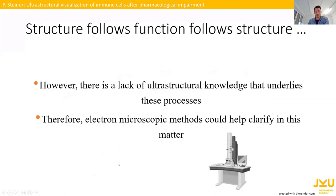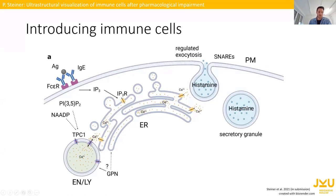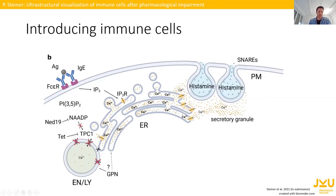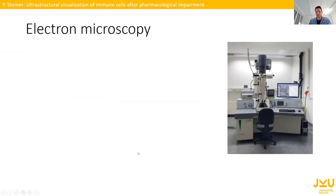If this cascade is triggered by an allergy, there is a higher release of calcium out of the ER, and this actually leads to an enhanced anaphylactic response in mice. The physiological background here is quite well established, but there is a lack of ultrastructural knowledge that underlies these processes. Therefore we're working with different electron microscopic methods. Two important questions: are there contact sites between the ER and the endolysosome in our controls, and if we block our channels, do they lose those contact sites?